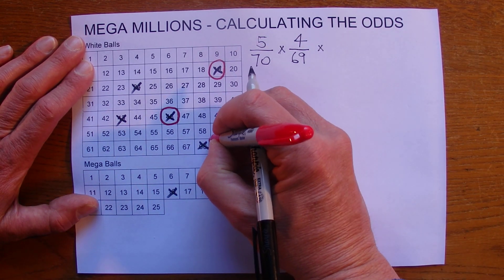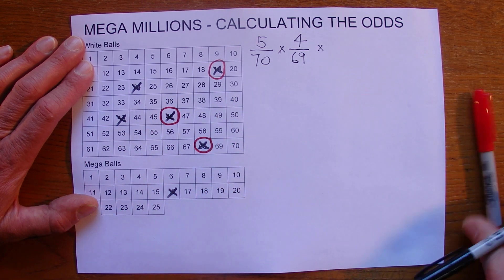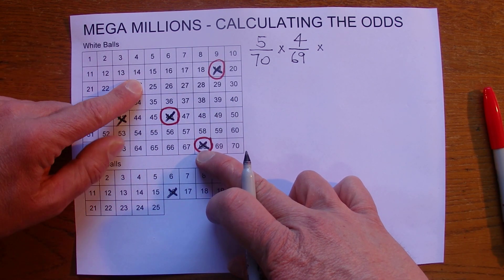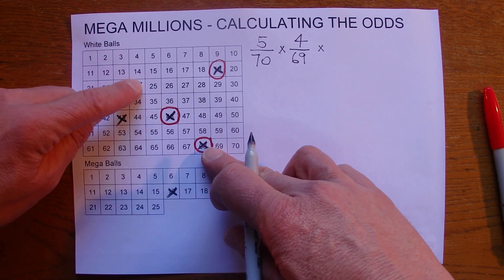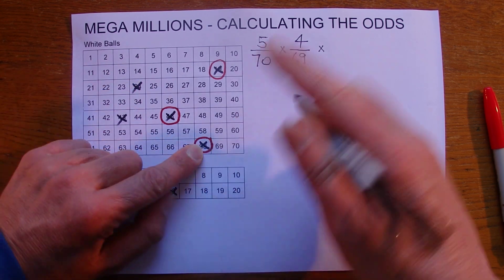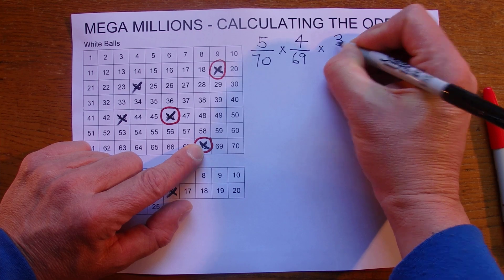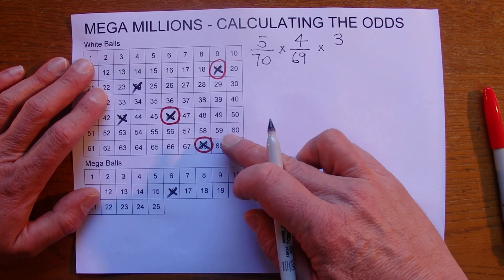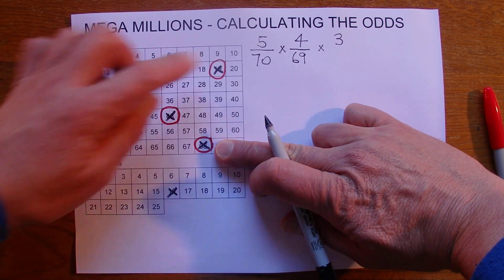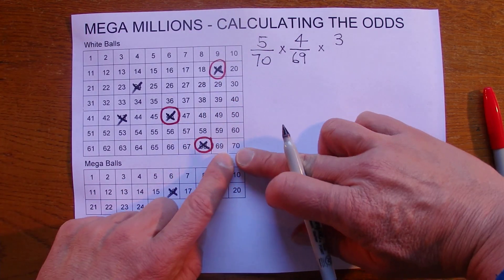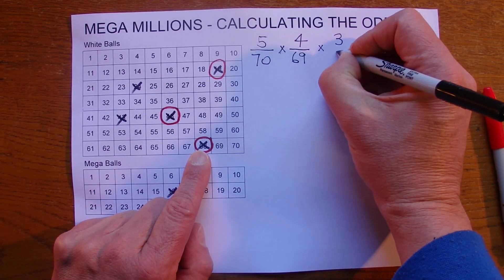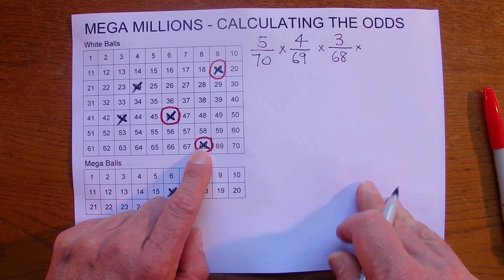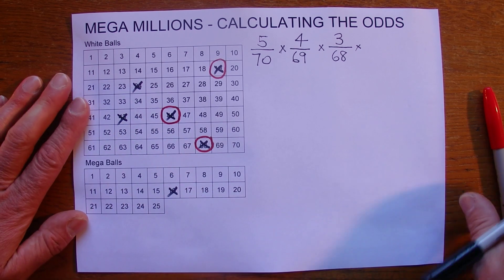And then the third ball comes out and you match the third ball. You've got three chances of selecting that, matching that third ball. And now two balls have already been drawn out of the barrel so you've only got 68. So you've got three chances in 68 of that third ball being a match.